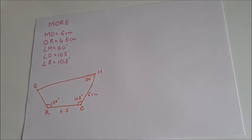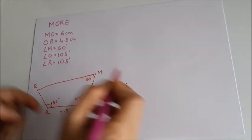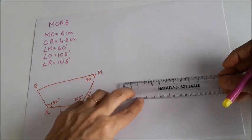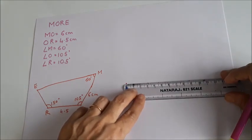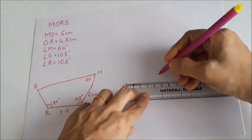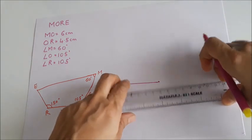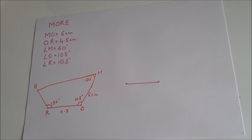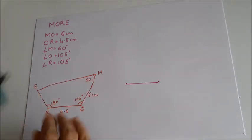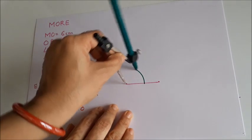Our procedure will be: first, draw RO equal to 4.5 cm. So let us mark the point R and draw line segment RO equal to 4.5 cm. Now at R we have to construct 105 degrees. For that, I will first draw a semicircular arc.